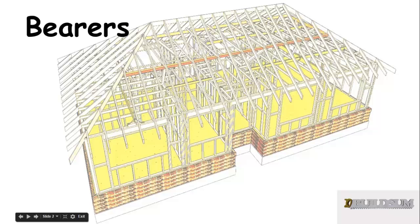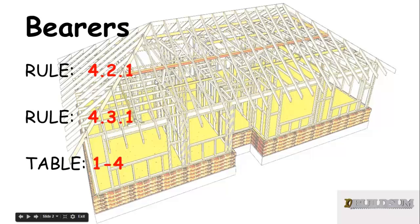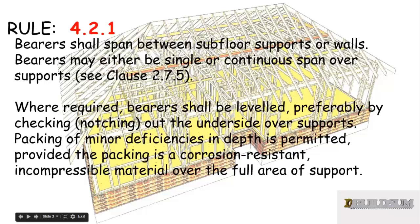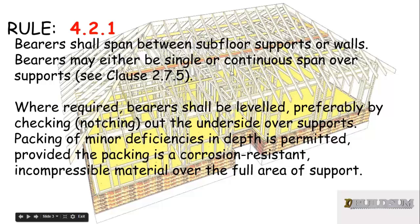The rules we need for bearers are 4.2.1 and 4.3.1. Rule 4.2.1 says that bearers shall span between the subfloor supports or walls, and may either be single or continuous span over those supports. Where required, bearers shall be leveled preferably by checking or notching the underside over the supports. Packing of minor deficiency in depth is permitted, providing that packing is a corrosion-resistant, incompressible material over the full area of support. Packing is probably the most preferred method nowadays, just due to the amount of time it takes to actually notch the bearers.